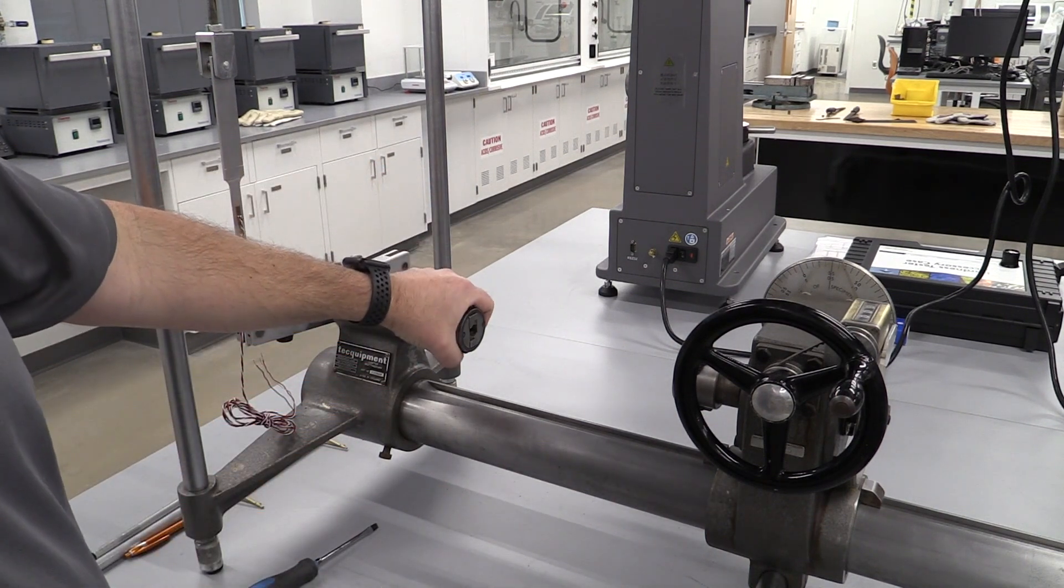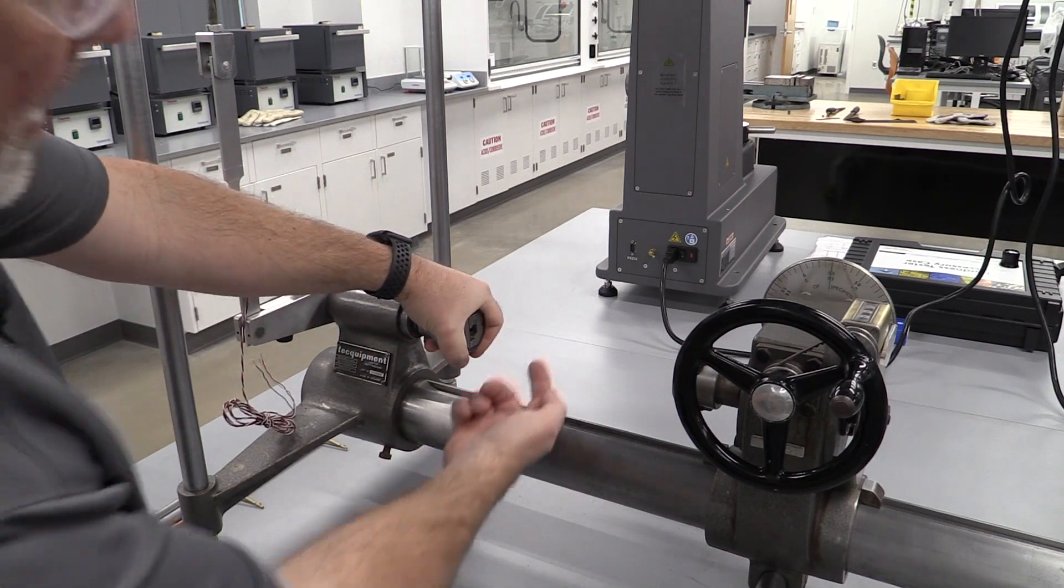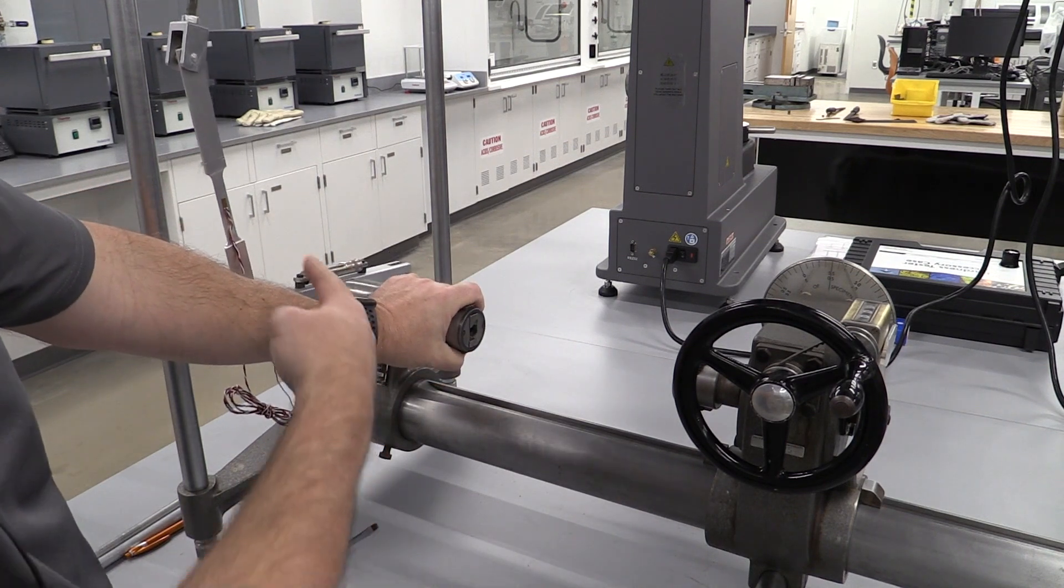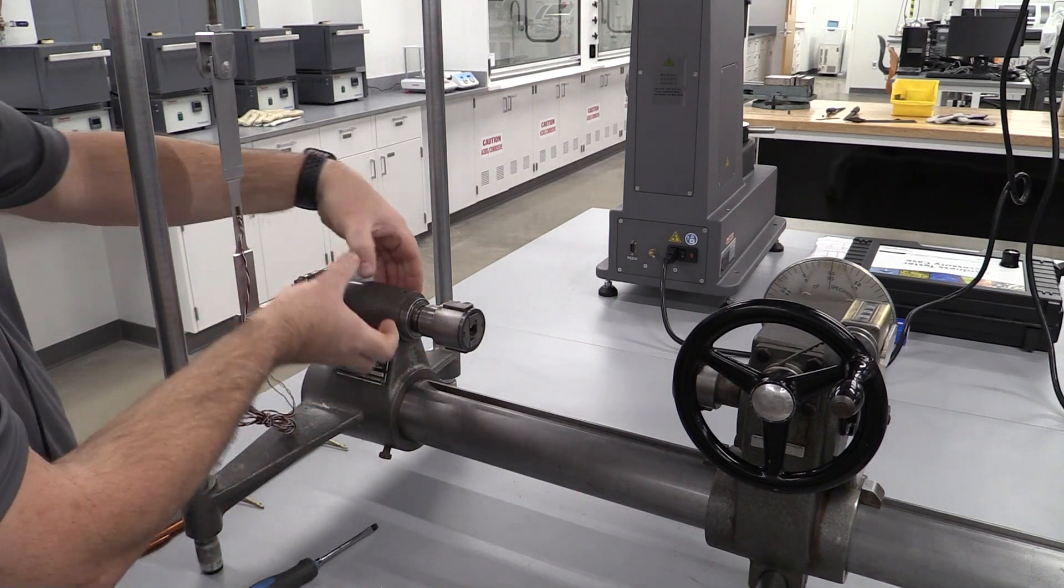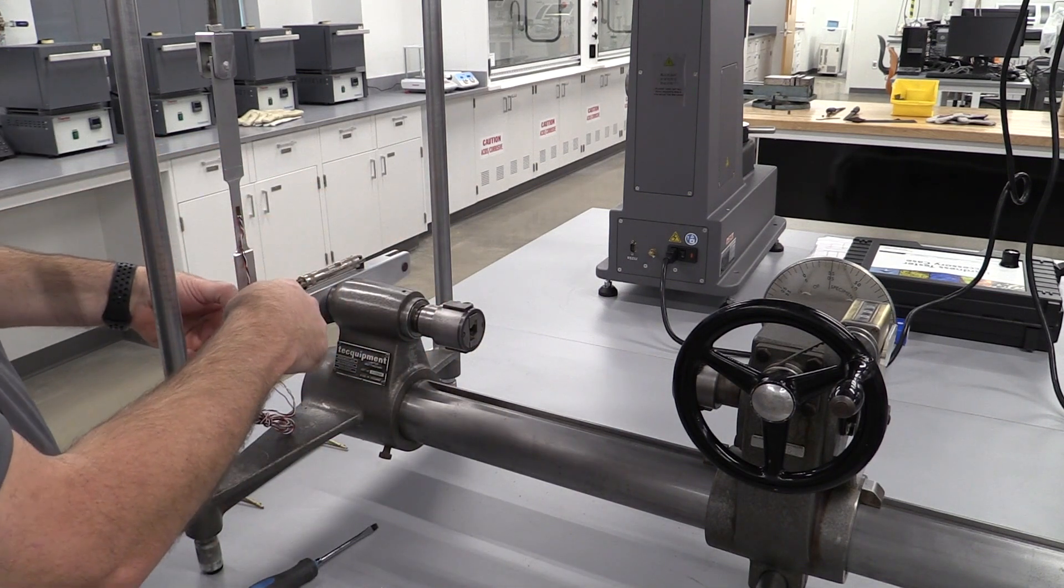What I want to point out on this side is this side is fairly stationary. If I try and twist it, putting a force on it coming down this way, it's really solid. If I twist it the other way, you're gonna see all this move because basically this is a pivoting section.